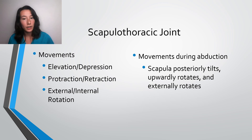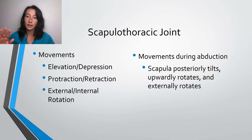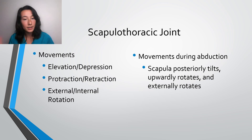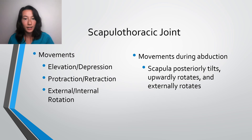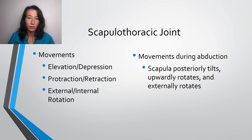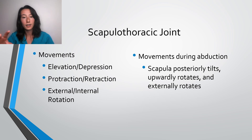Now during shoulder abduction, what happens specifically at the scapulothoracic joint is that the scapula posteriorly tilts, upwardly rotates, and externally rotates. Now this seems very similar to what happens at the AC joint — and keep in mind that the scapula is part of both of these joints. It's part of the scapulothoracic joint and the acromioclavicular joint, since the acromion is on the scapula.